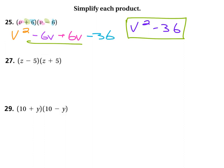You get this special case where you can just square the number in the front, v squared, square the number in the back, 6 times 6, 36, and then put a negative to subtract in between them, v squared minus 36.